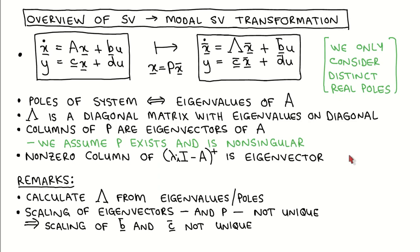As a reminder, the problem we want to solve is this. Given a state variable model of a system, we want to transform the states of the system using the transformation matrix P so that the transformed system is in the modal canonical form.